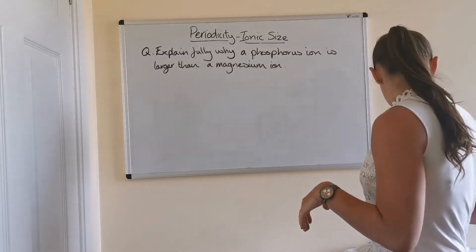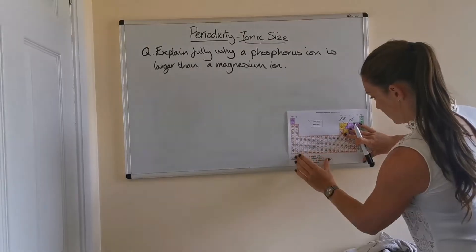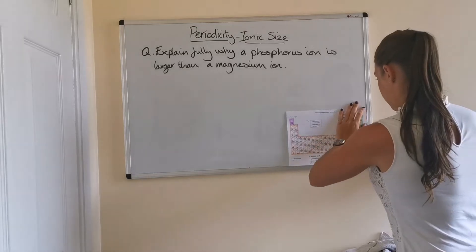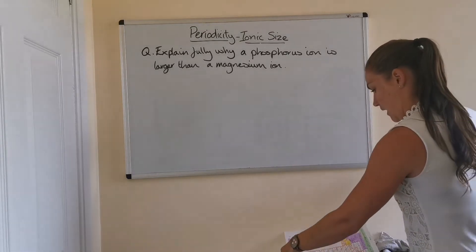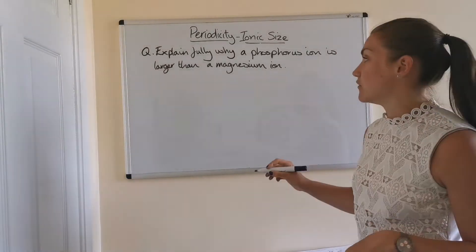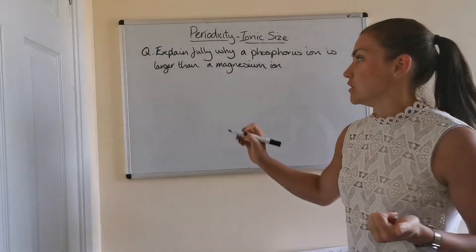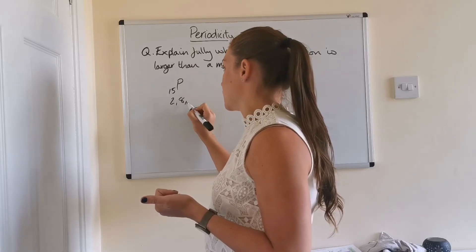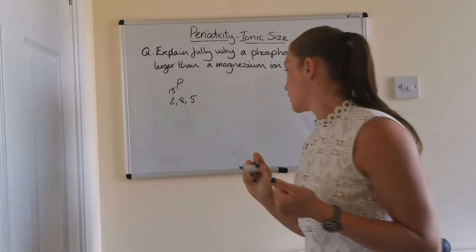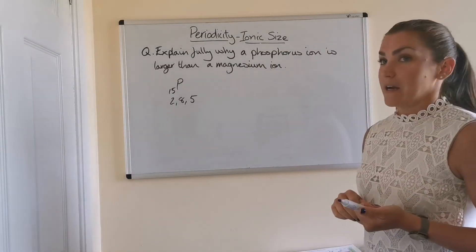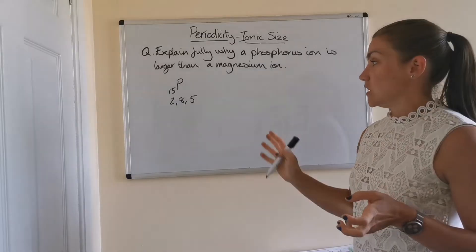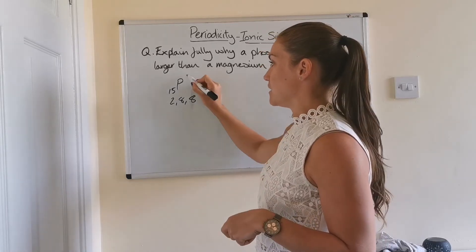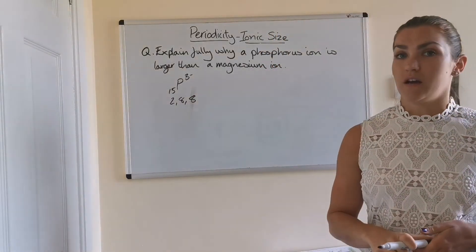Phosphorus has atomic number 15, and its electron arrangement as an atom is 2,8,5. However, as an ion, it needs a stable electron arrangement, so it's going to need to fill that outer shell to make it 8. So it becomes 2,8,8, which means it's gained 3 electrons and has a 3 negative charge.